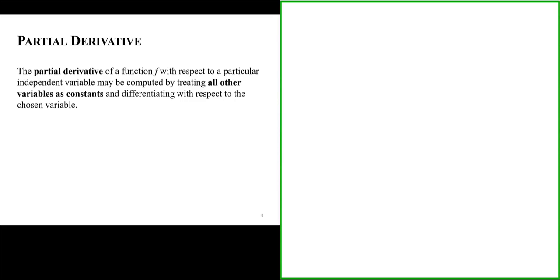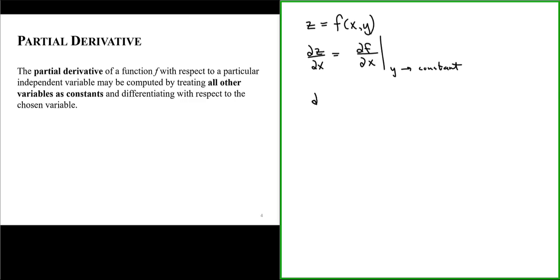The partial derivative of a function f with respect to a particular independent variable may be computed by treating all other variables as constants and differentiating with respect to the chosen variable. For example, let's say z is a function of the independent variables x and y. To evaluate the partial derivative of z with respect to x, we evaluate the function with respect to x by treating y as a constant. And to evaluate the partial derivative of z with respect to y, we evaluate the derivative of our function f with respect to y while treating x as a constant.